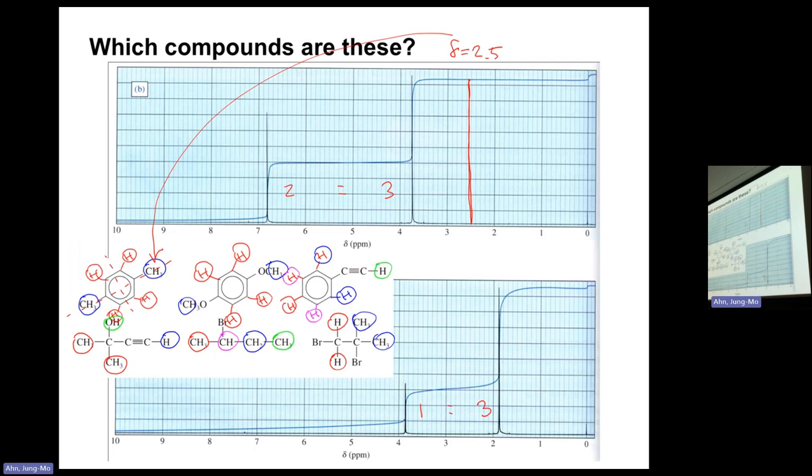Now that one, the integral ratio is 1 to 3, and if you look at the hydrogens, there's 2 hydrogens there, 6 hydrogens there, so 2 to 6 is 1 to 3 ratio. So even the integration points out that this must be it, because that's the only molecule having the ratio of the hydrogen of 1 to 3. So everything matches.